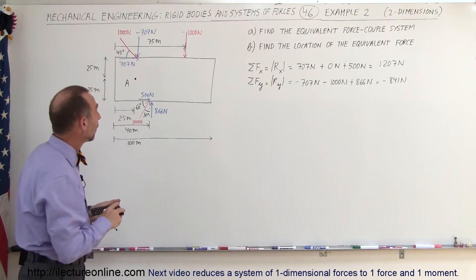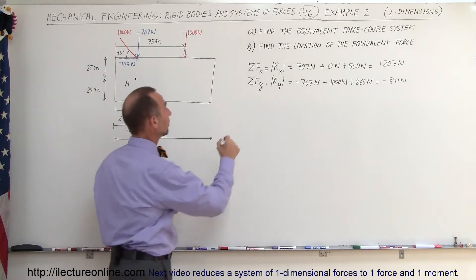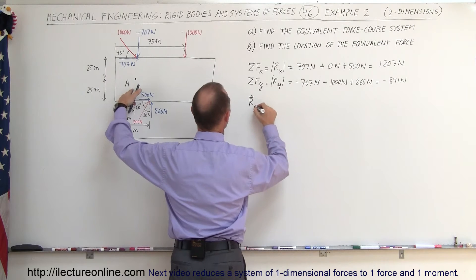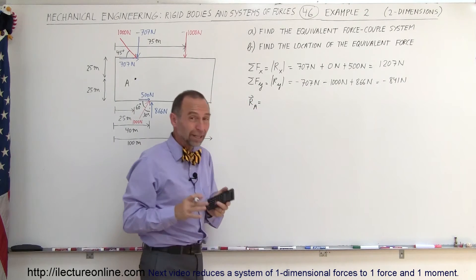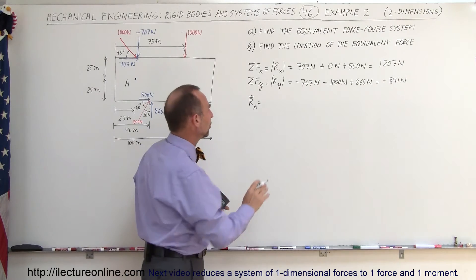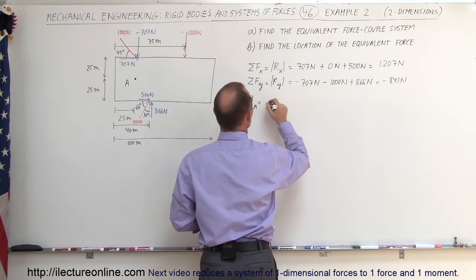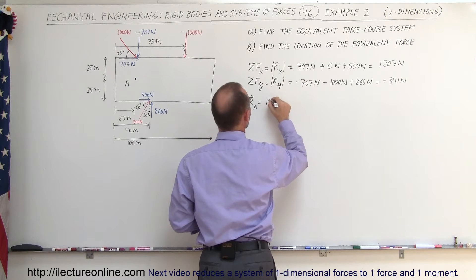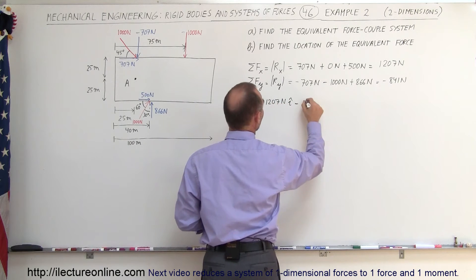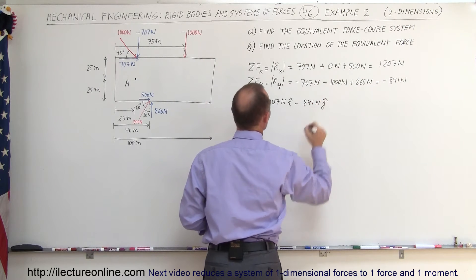The equivalent resultant about point A is 1207 Newtons in the X direction and minus 841 Newtons in the Y direction. The moment about point A is the sum of the moments caused by all the various force components added together.